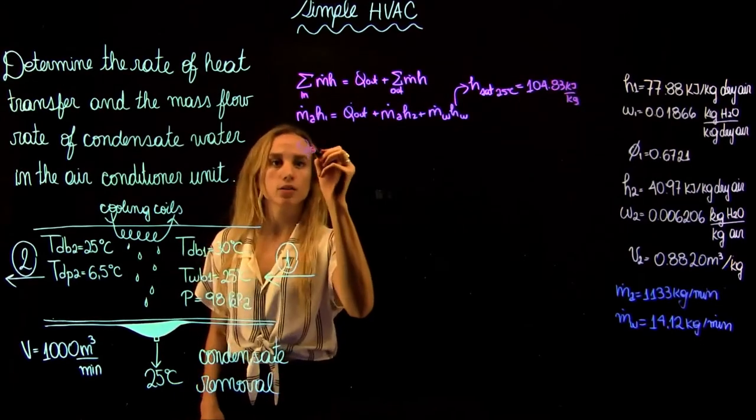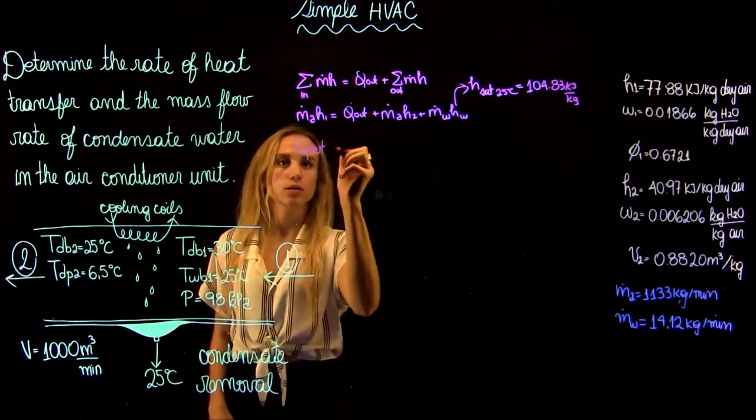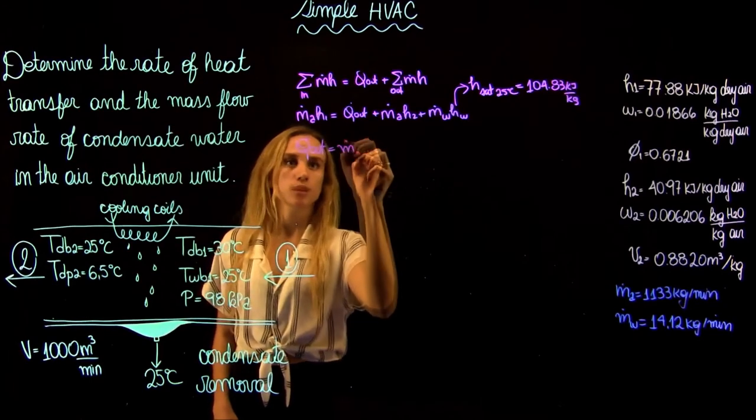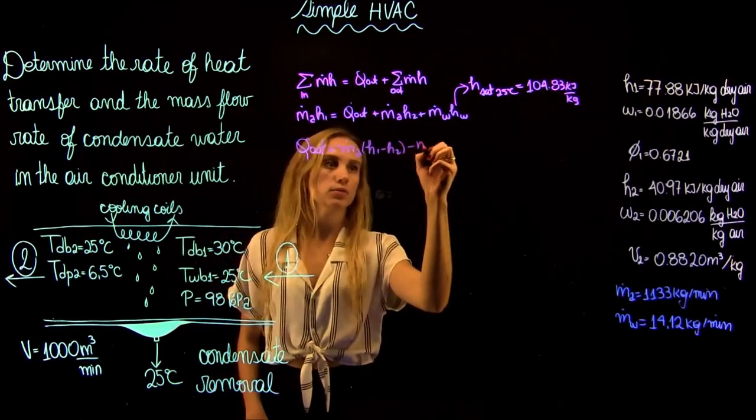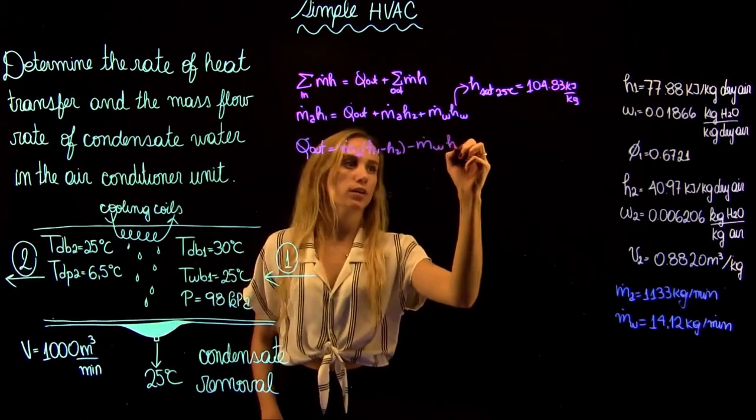Now we can rewrite our equation for the heat out. It's going to be the mass of air times enthalpy 1 minus enthalpy 2 minus mass flow rate of water times enthalpy of water.